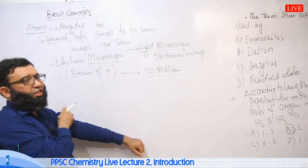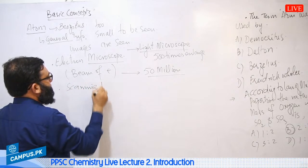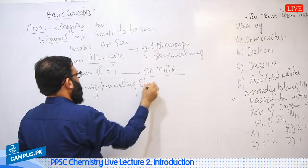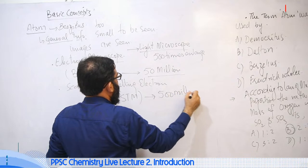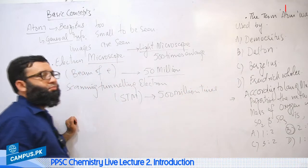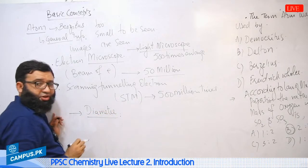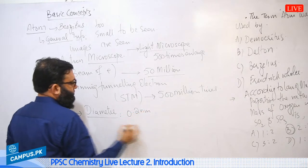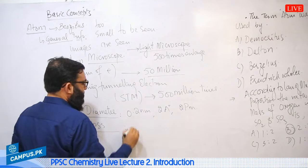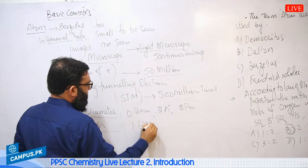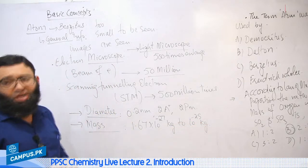When we discuss the electron microscope, the latest microscope we have is the Scanning Tunneling Electron Microscope, called STM. It has the ability to show 500 million times enlarged images. The diameter of an atom ranges from 0.2 nanometers, it may be 2 angstroms or 2 picometers, and the mass of an atom ranges from 1.67 × 10⁻²⁷ kg to 10⁻²⁵ kg.